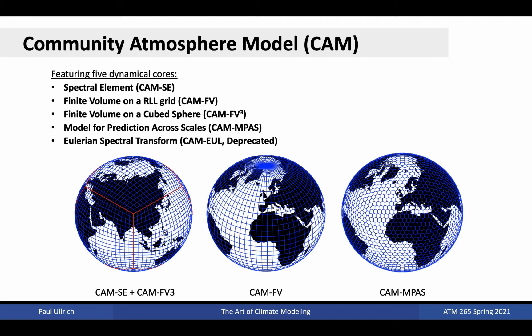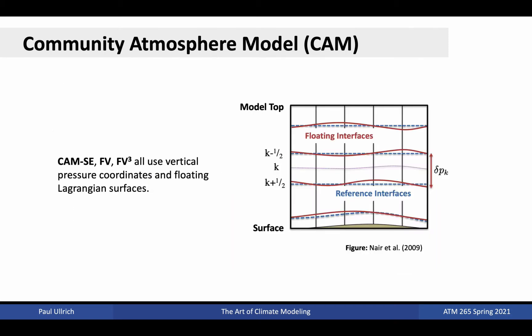While they all solve the hydrostatic primitive equations, each of these has strengths and weaknesses. The Spectral Element Dynamical Core is one of the slower dynamical cores, but supports high-order accuracy and parallel scalability. The Eulerian Dynamical Core is fast and accurate, but only efficient when employed on just a few processors. Three of these dynamical cores employ pressure coordinates and floating Lagrangian surfaces in the vertical, which is not a particularly common design decision among global atmospheric modeling systems. For those dynamical cores that use this design, each layer is effectively a two-dimensional model with vertical transport and diffusion achieved via remapping in each column.